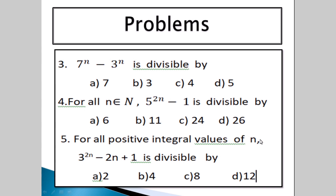For all positive integral values of n, 3 to the power of 2n minus 2n plus 1 is divisible by — options are 2, 4, 8, 12. Put n equals 1: 3 squared is 9, and 9 minus 2 into 1 minus 2 plus 1 gives 9 minus 1 equals 8. So the answer is option C.